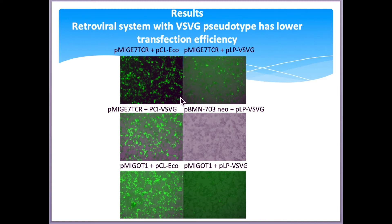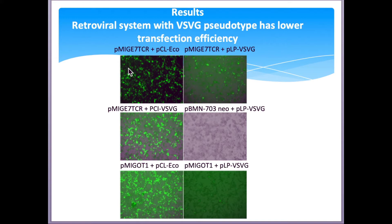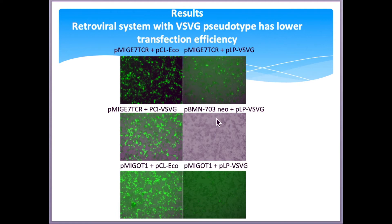Moving to results: these are pictures of Phoenix ECO cells taken under fluorescence microscope after 48 hours of transfection. These are the retroviral vectors — PMIC E7 TCR and PMIC OT1 — both of which have the GFP insert, so when cells take up the retroviral vector, you can see GFP expression. The PBMN 703 neo is an MMLV-based vector, so even if cells have been transfected, you can't see fluorescence because it lacks the GFP insert. The more cell transfection that has occurred, the more GFP expression you see.